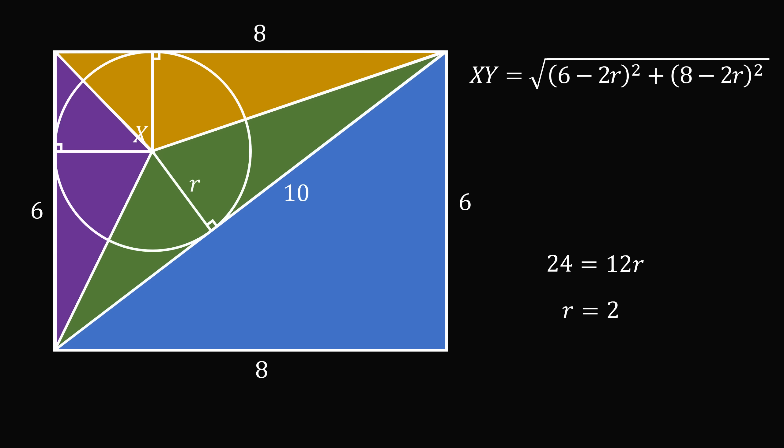We now substitute in for our formula for XY. This means XY is equal to the square root of 2 squared plus 4 squared, and that's equal to the square root of 20, which is approximately equal to 4.472, and that's the answer.